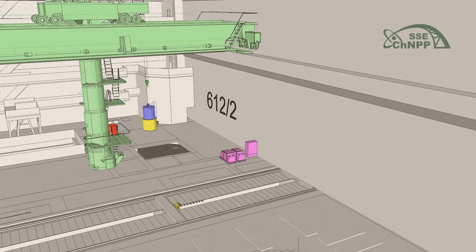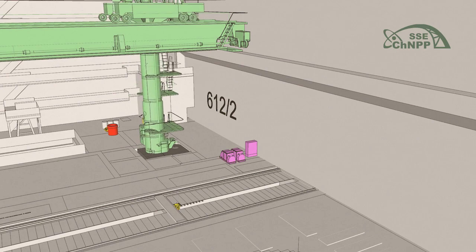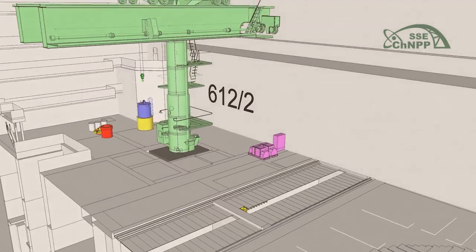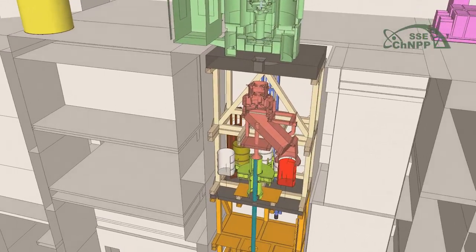A refueling machine moves the long-length items. If necessary, the surface of items is dried inside it prior to processing. The facility will be installed in a central hole's technological shaft.